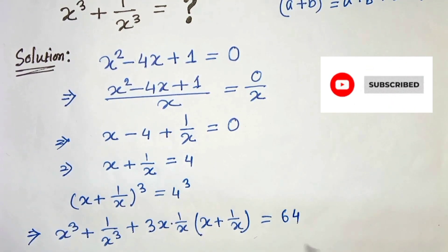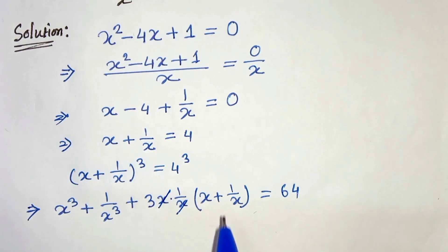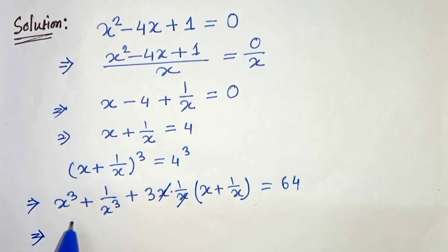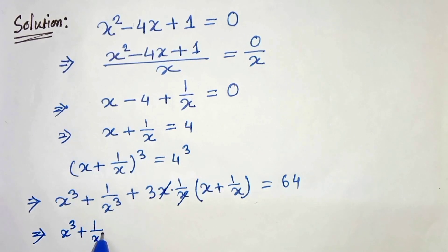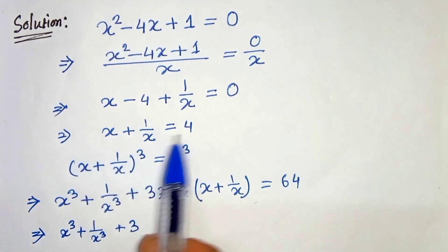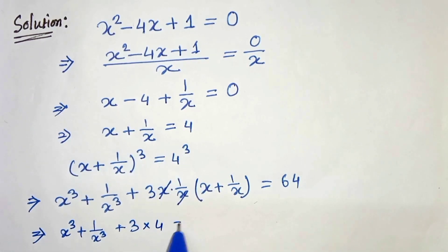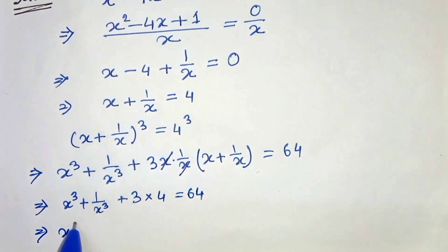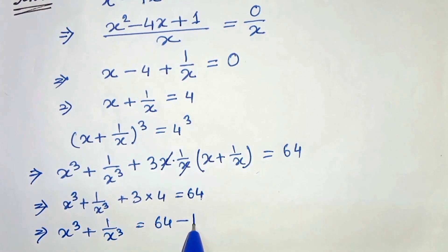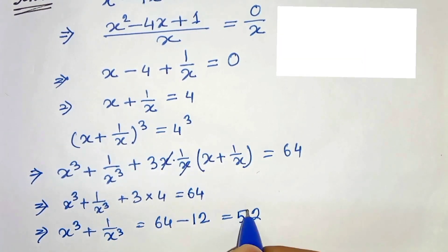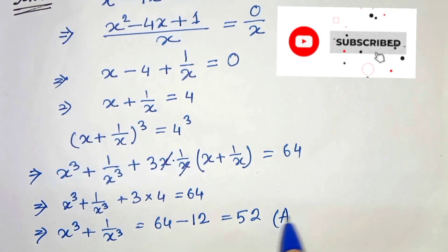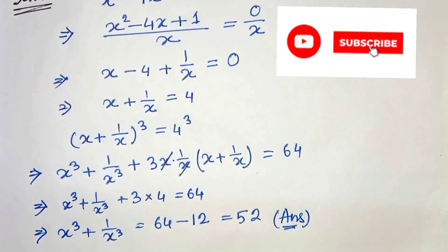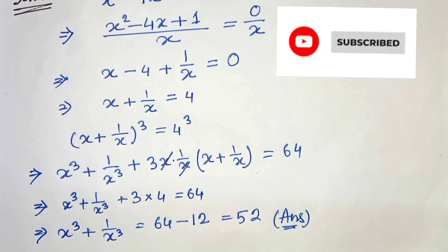That is 64. Now x and 1 over x cancel, giving us 3 times 1, and x plus 1 over x is 4, so 3 times 4 equals 12. Therefore x cubed plus 1 over x cubed equals 64 minus 12, which equals 52. This is our answer. Thanks for watching! If you like the video please give it a thumbs up, and if you like this type of content please subscribe to my channel.